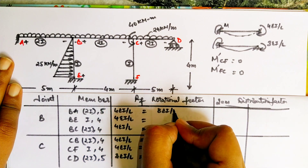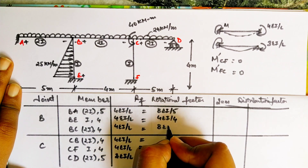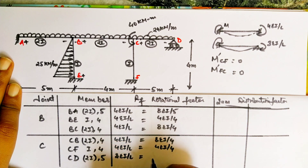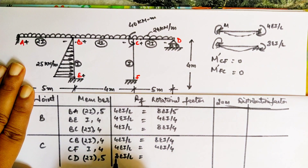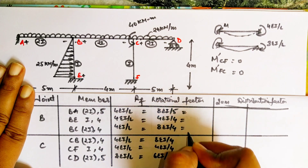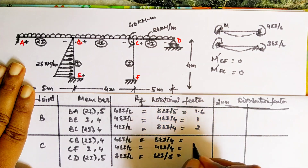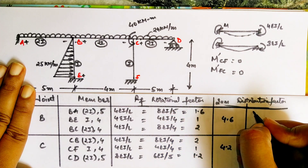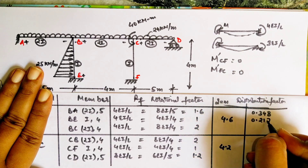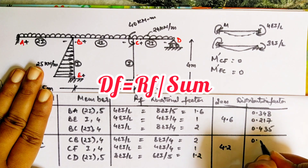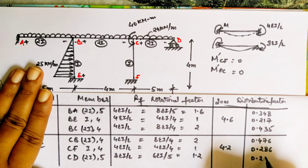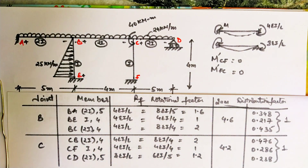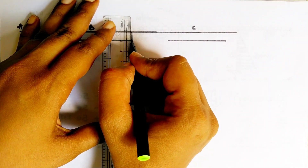I am writing the length and rigidity value separately so chances of mistakes are less. Most students make mistakes by overlooking rigidity — substituting everything as I or 2I incorrectly. After substituting all values in the formula and calculating, you sum up all the RF values in each column at B and C. DF equals RF divided by the sum. Remember: the sum of all DFs at a joint must equal 1; adjust decimals if needed.